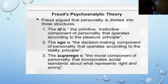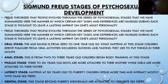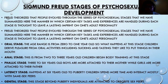This is Freud's psychoanalytic theory, wherein personality is divided into three structures: Id, Ego, and Superego. Now let us go to Sigmund Freud's stages of psychosexual development. Freud theorized that people evolved through a series of psychosexual stages. The manner in which key tasks and experiences are handled during each stage is thought to leave a lasting imprint on one's adult personality.